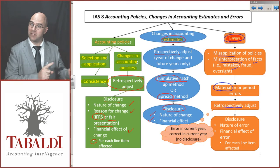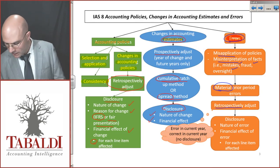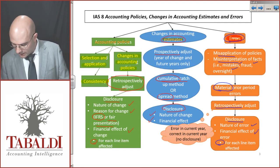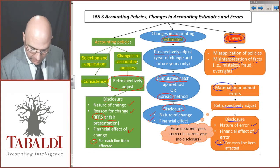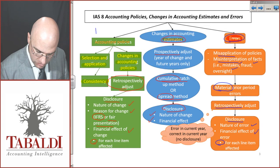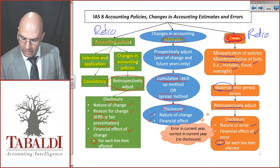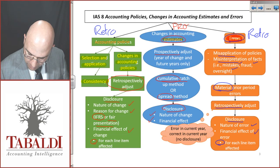This is very different to estimates, which are done prospectively — only this year going forward. For disclosure of errors: the nature of the error and the financial effect of the error for each line item affected. So the key point is: accounting policies are changed retrospectively, errors also retrospectively, whereas estimates are done prospectively.